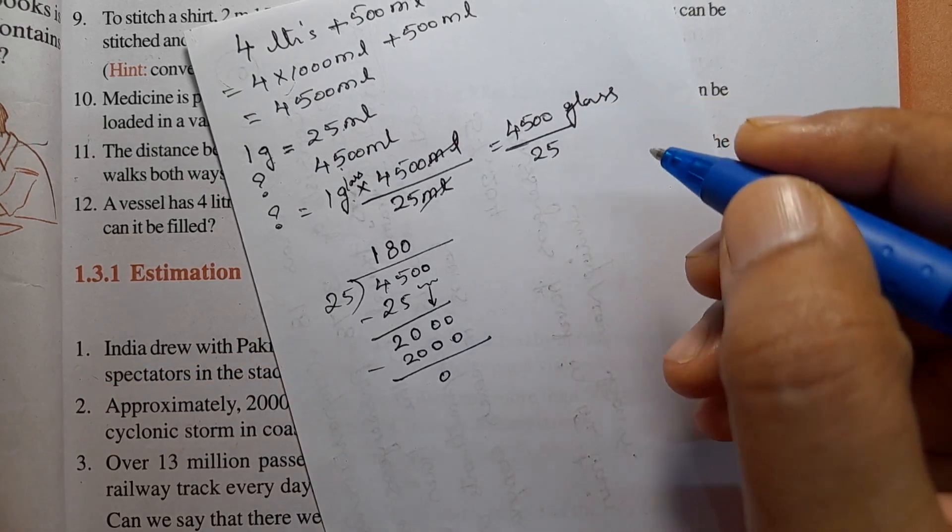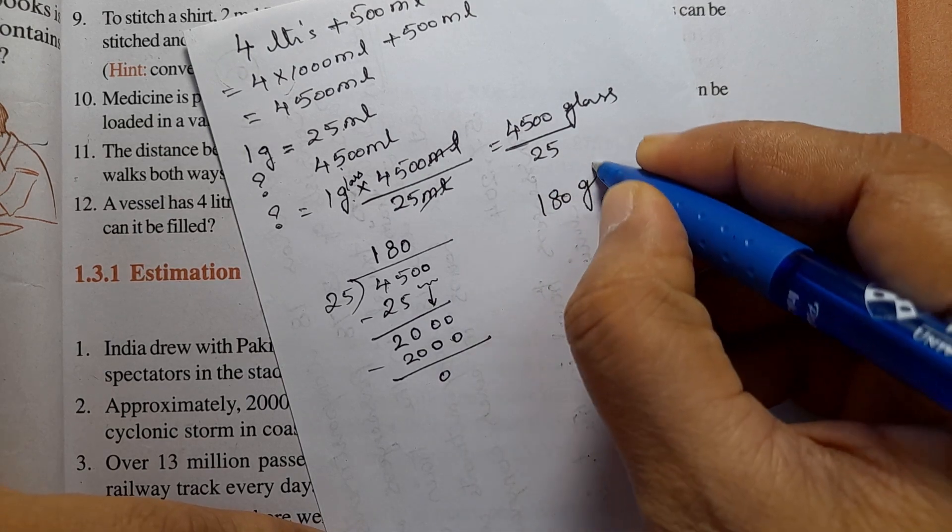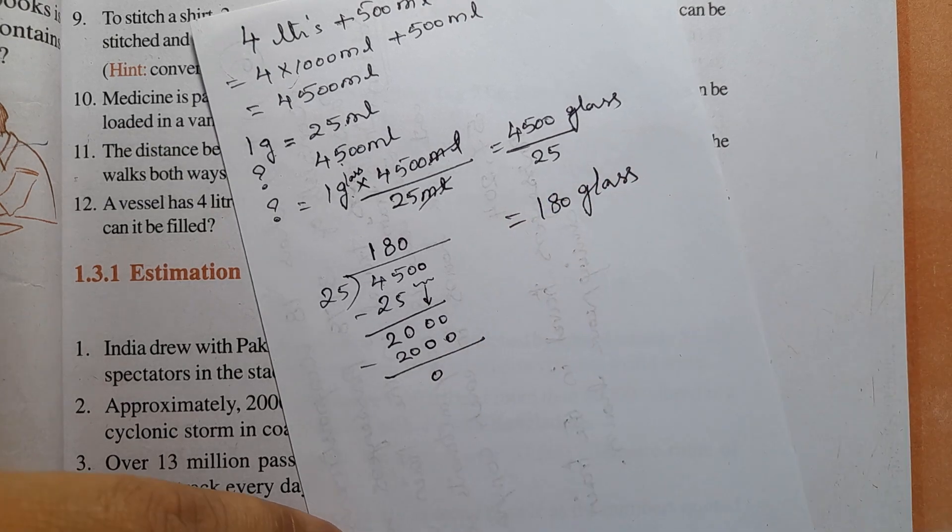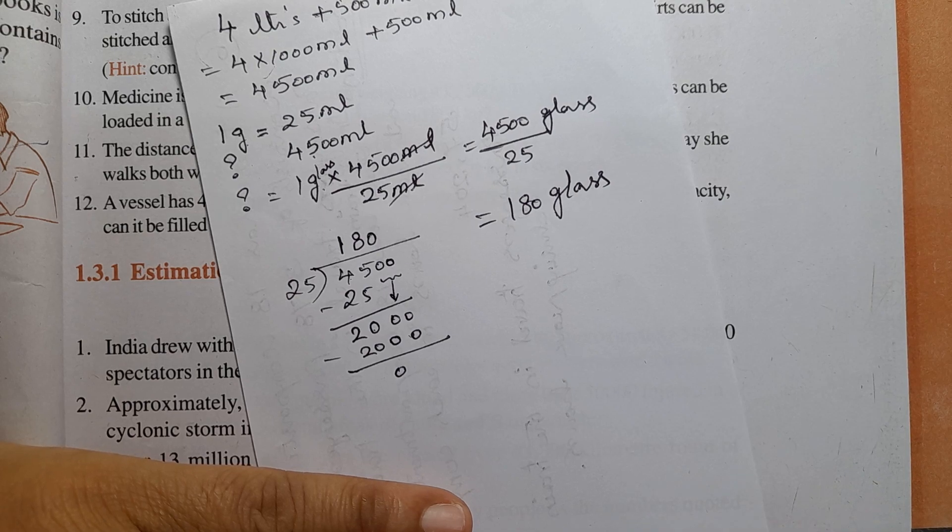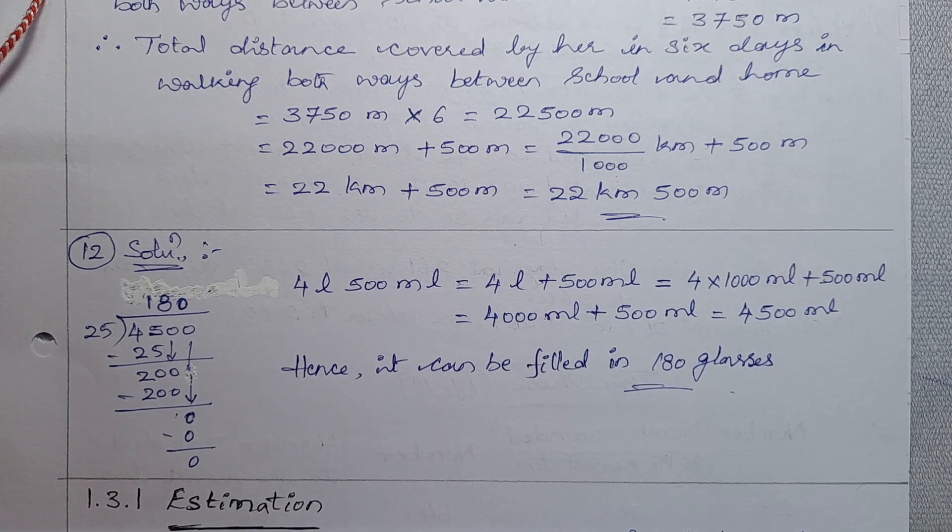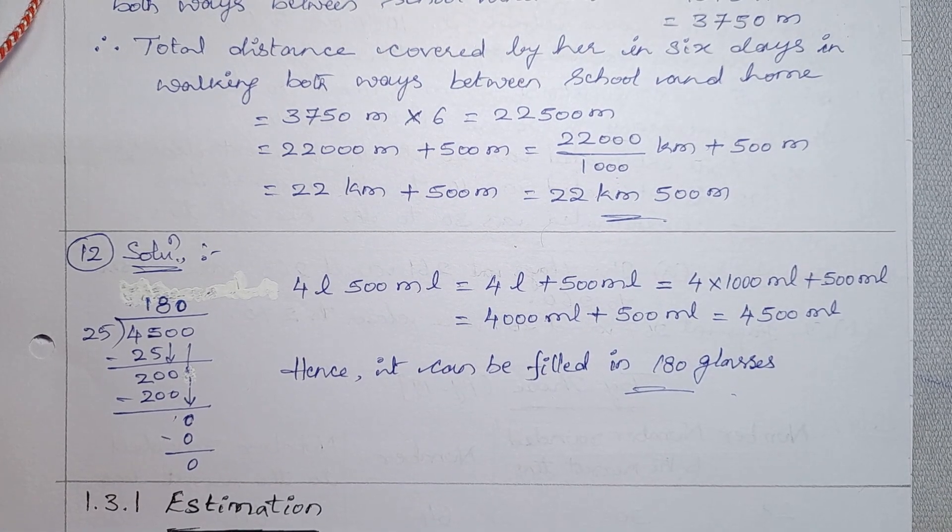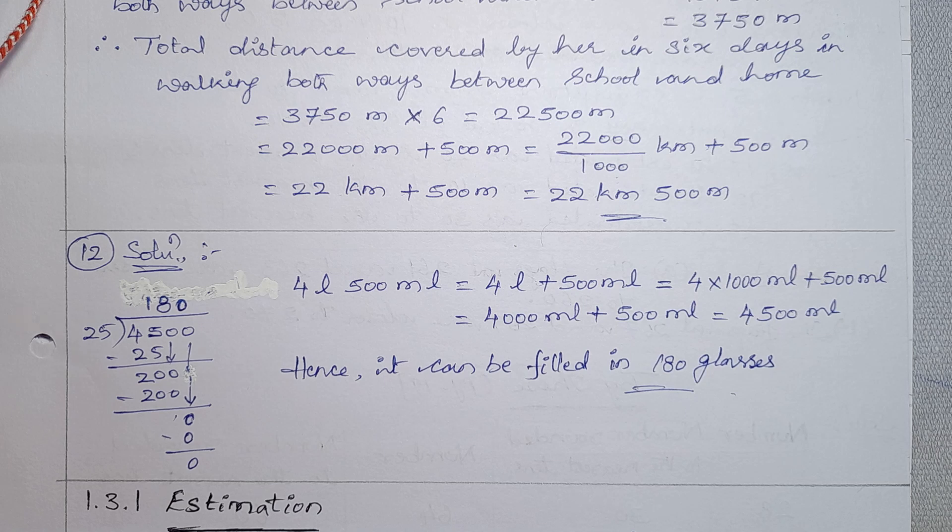So 4500 ml of curd can fill 180 glasses. Solution: 4 liters multiply with 1000 ml equals 4000 ml, plus 500 ml equals 4500 ml. Then 4500 ml divided by 25 ml, hence it can be filled in 180 glasses. Thank you so much.